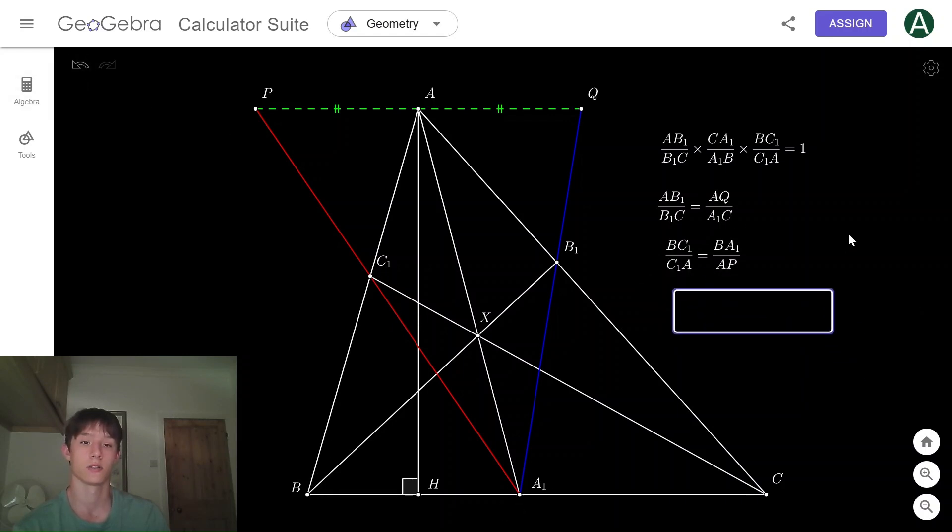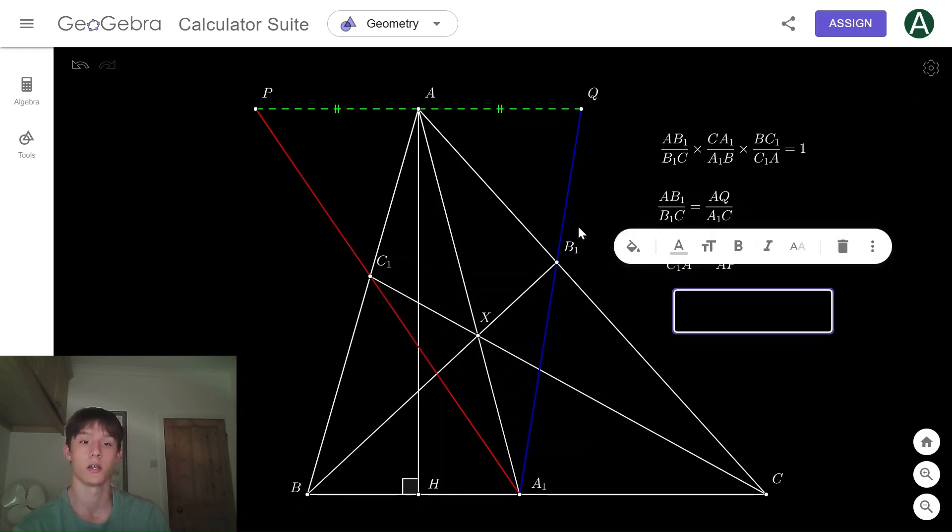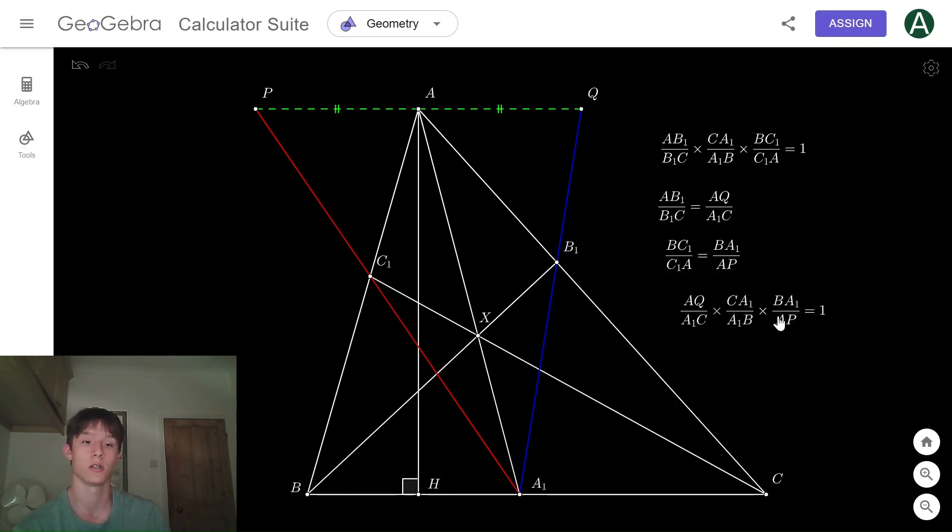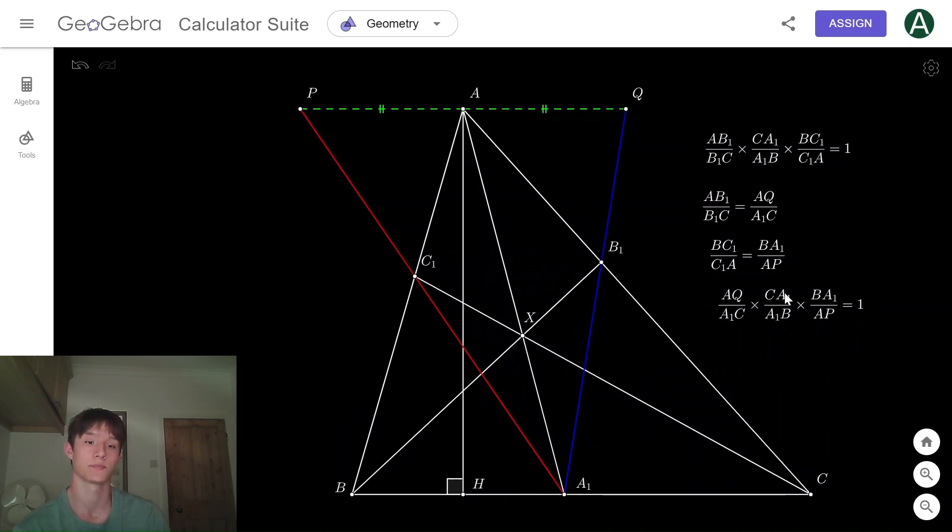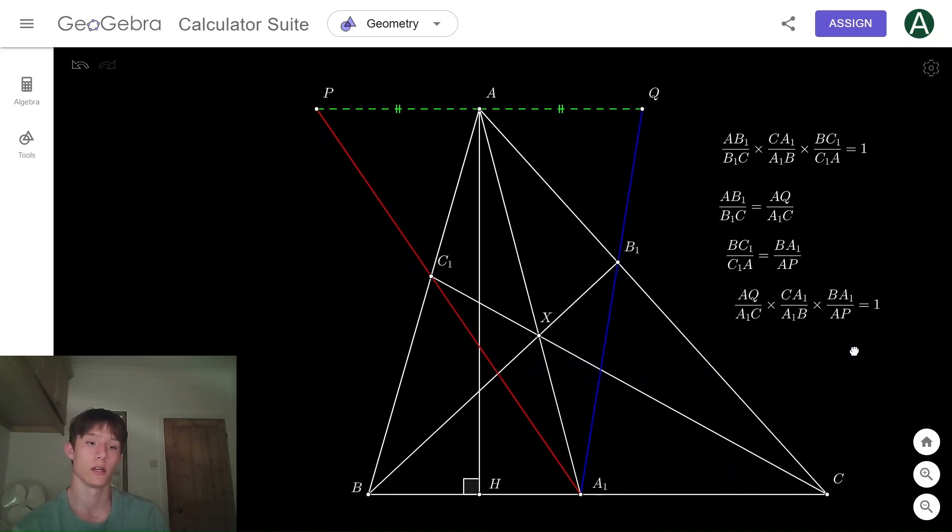As you can see, AB1/B1C equals AQ/A1C, and BC1/C1A equals BA1/AP. If we substitute these two in, we get that AQ/A1C times CA1/A1B times BA1/AP—they cancel—so we're left with AQ/AP equals one, which is essentially AQ equals AP.